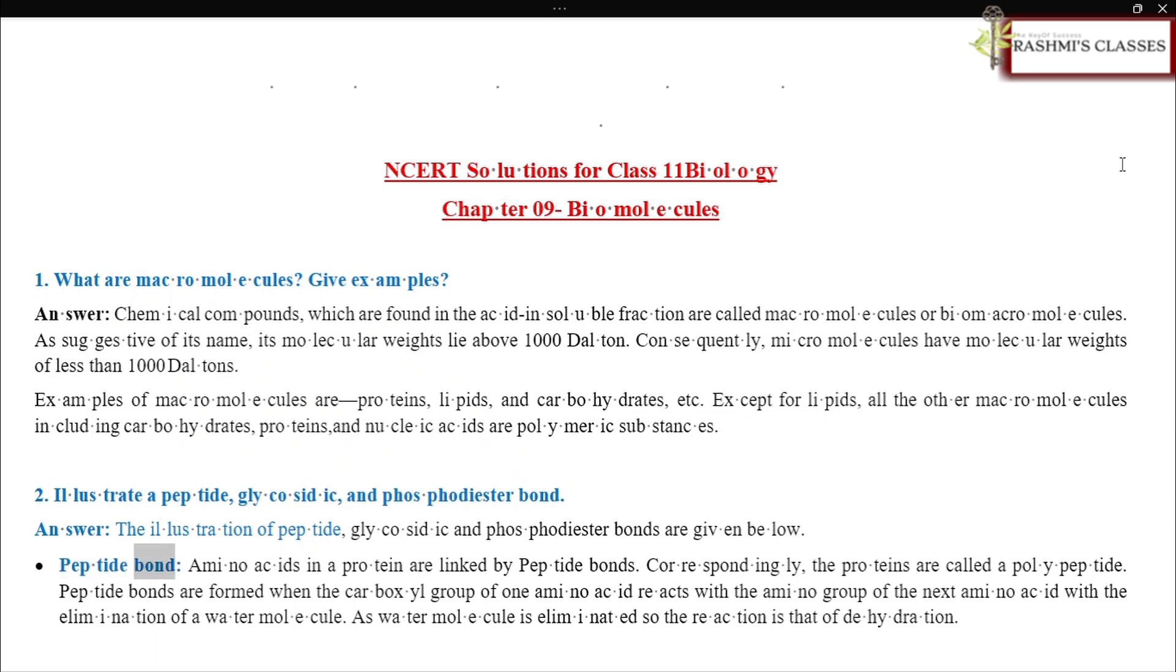Peptide bond. Amino acids in a protein are linked by peptide bonds. Correspondingly, the proteins are called a polypeptide. Peptide bonds are formed when the carboxyl group of one amino acid reacts with the amino group of the next amino acid with the elimination of a water molecule. As water molecule is eliminated, so the reaction is that of dehydration.